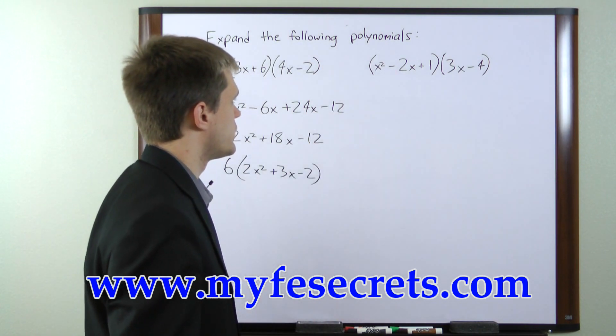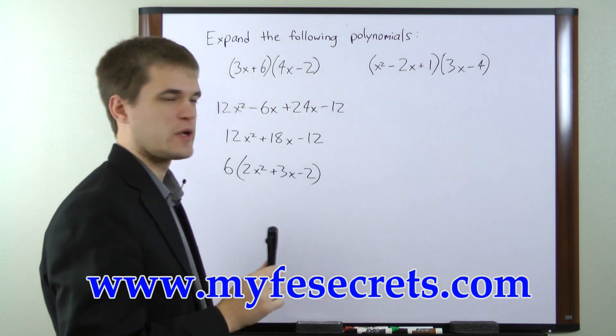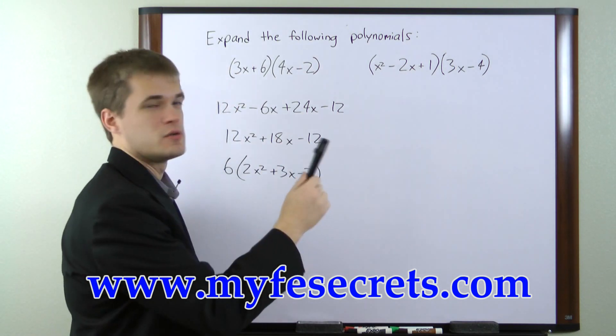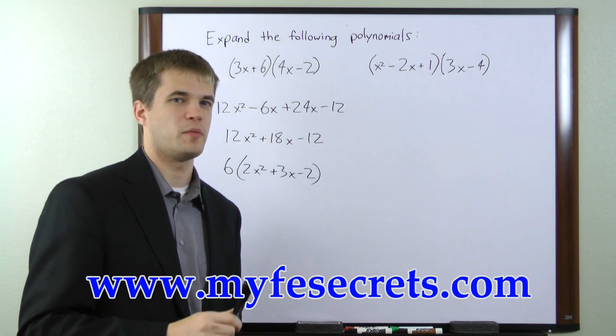In this second example here, we have a three termed expression and a two termed expression. So we can't strictly use the FOIL method, but we'll use an extrapolation of the FOIL method.